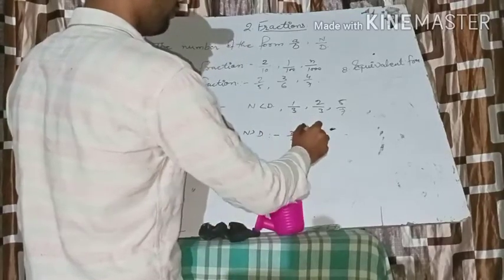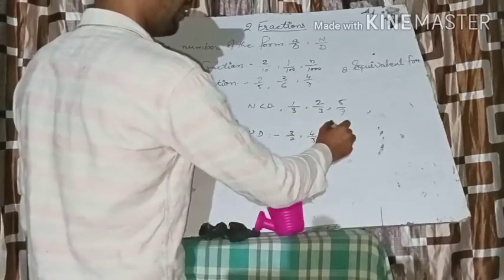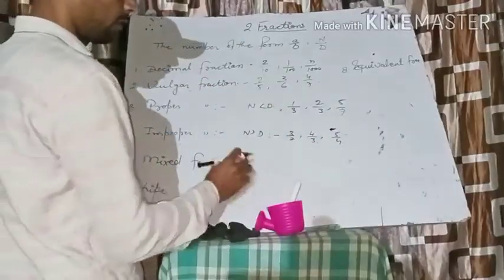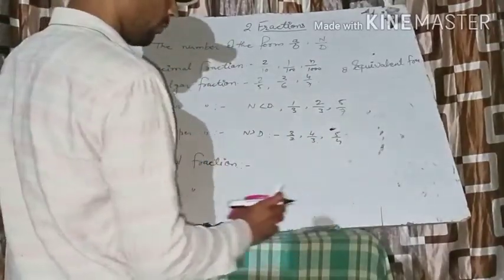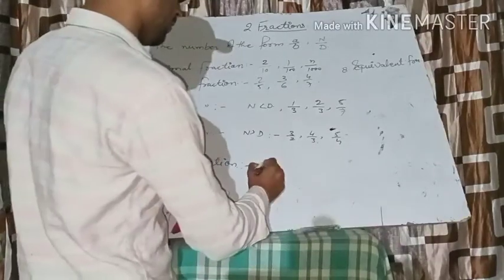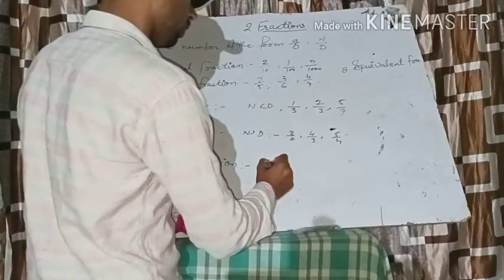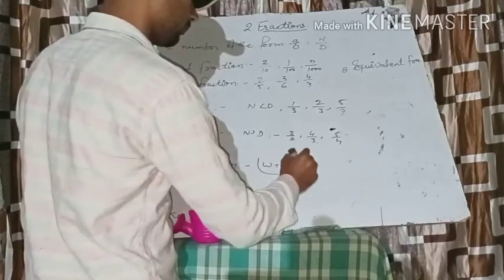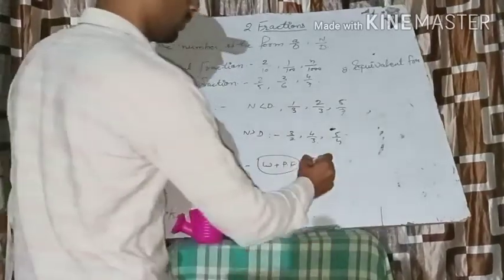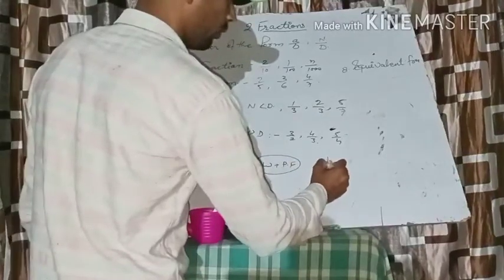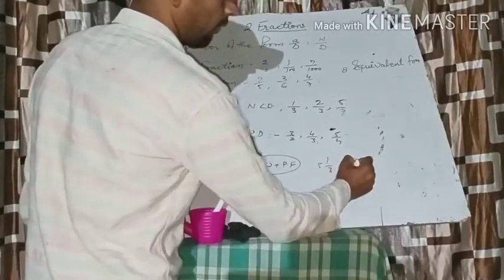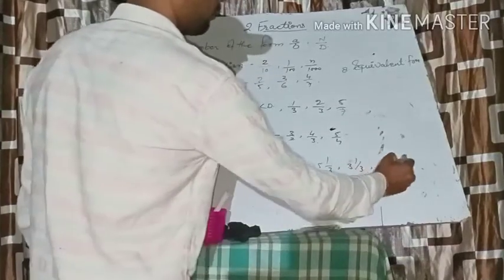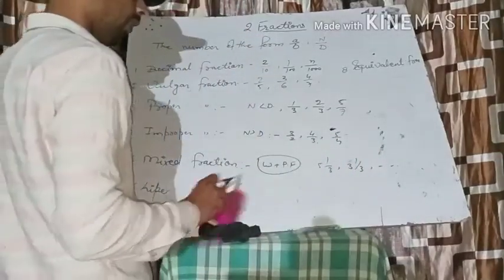In a mixed fraction, it is a combination of a whole number and a proper fraction — whole number plus proper fraction. For example: five and one upon two, three and one upon three, and so on.